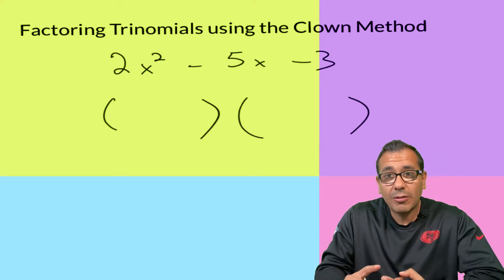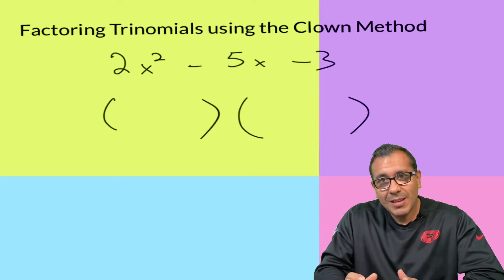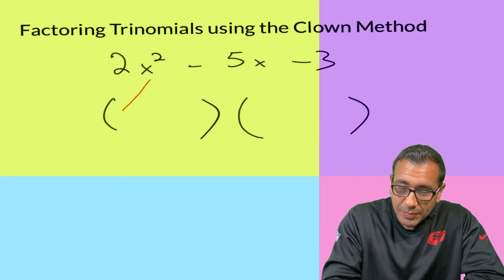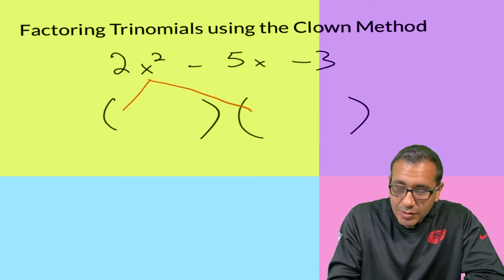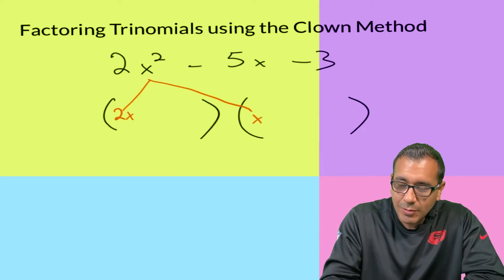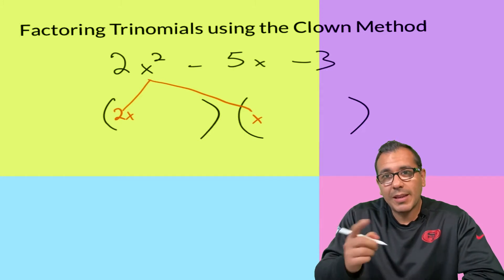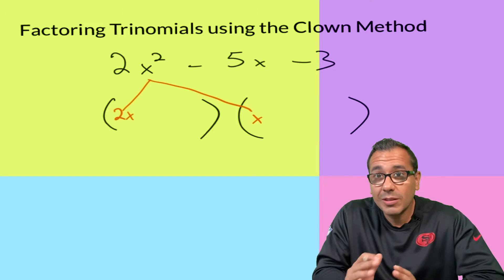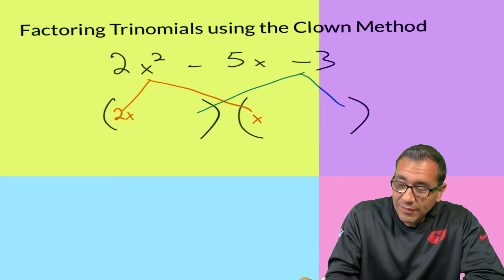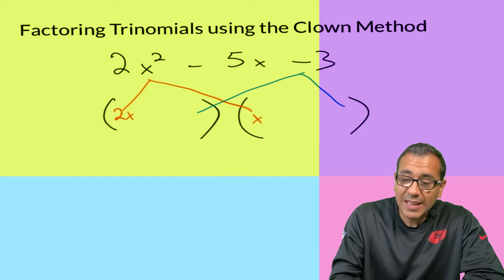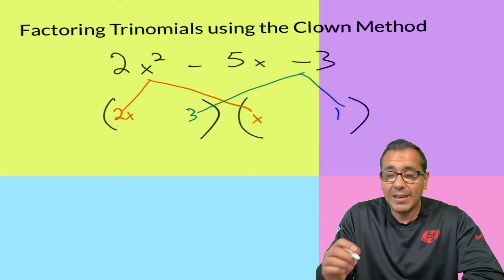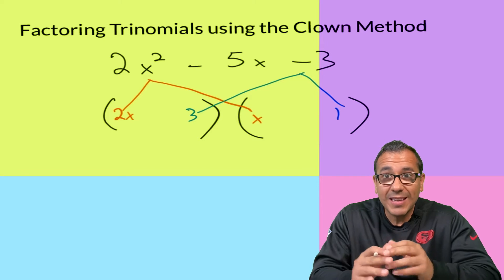So here's what's going on. First, always make sure there's no GCF — you can't factor out a greatest common factor. In this case there's nothing these terms have in common. So we're looking for two numbers: these two factors have to multiply to give you 2x², so we use 2x and x. Then these two factors have to multiply to give the negative 3, so I'll put a 3 here and a 1 here. I always put the signs in at the end.